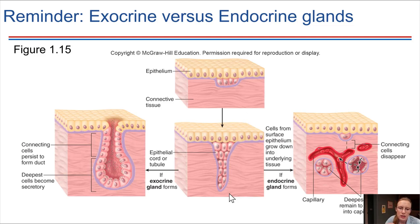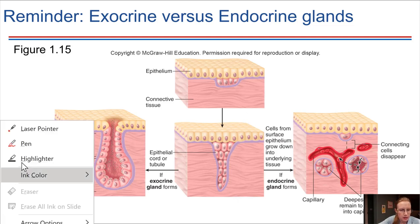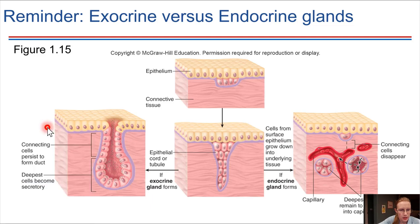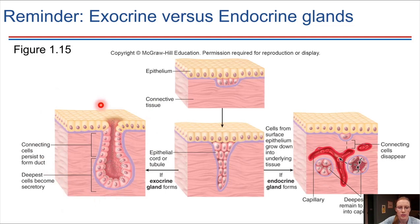With glands, there are two different types: exocrine and endocrine. Exocrine glands, like on the left, have a duct that leads to some sort of a surface, so these can secrete out of the gland directly.